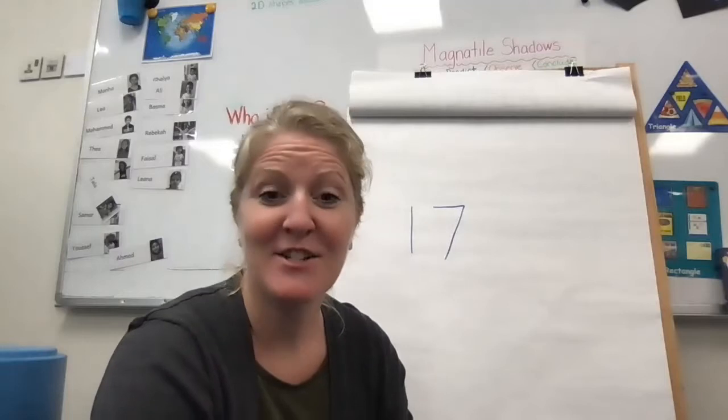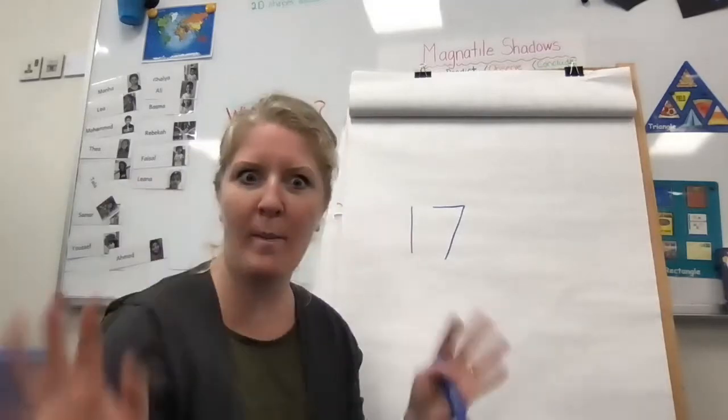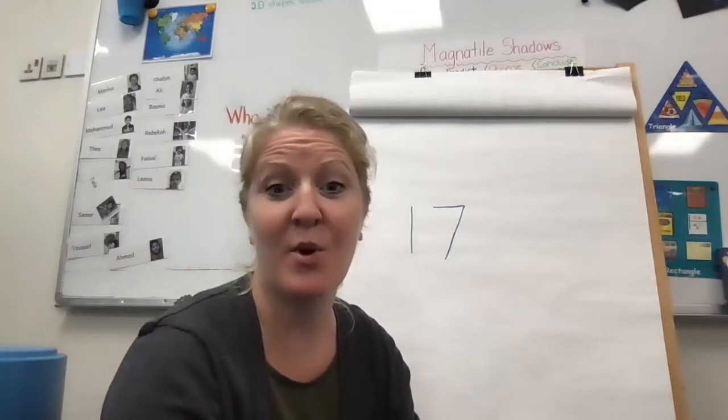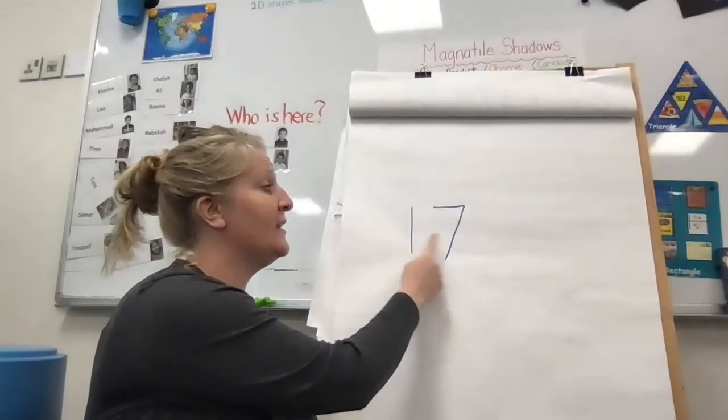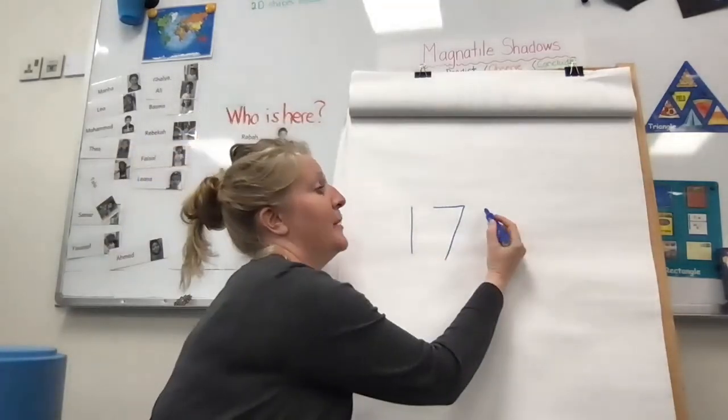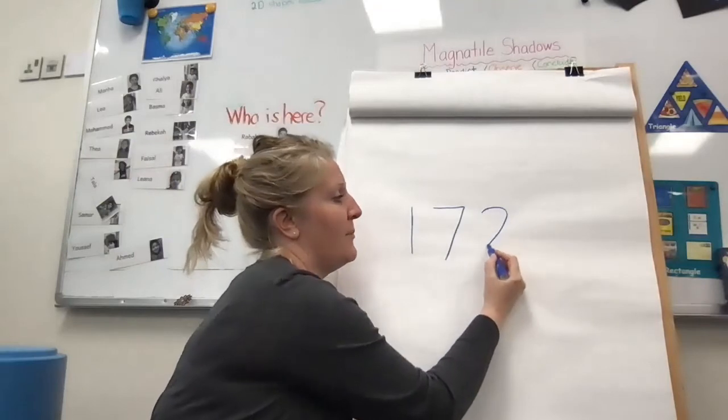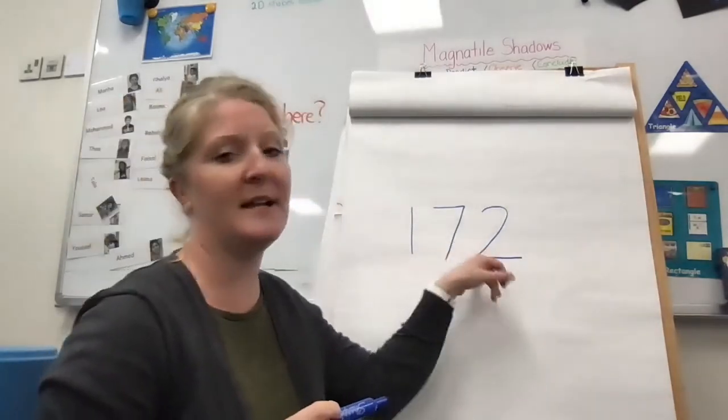Hi pre-K4, so today we are going to work on showing numbers in a whole bunch of different ways. We know that we can write the numbers like I have here: the number one, the number seven. We could write the number two - go up, curve around, and slide to the right. We have a symbol, a written symbol for numbers.